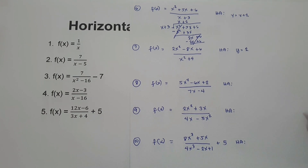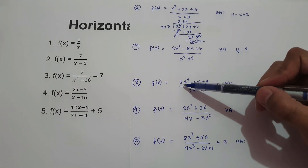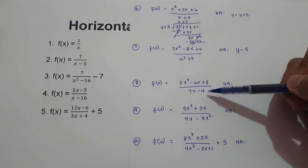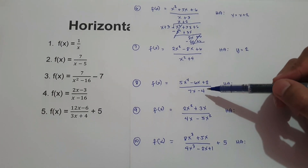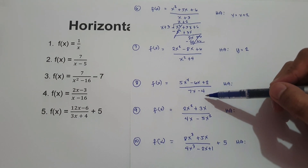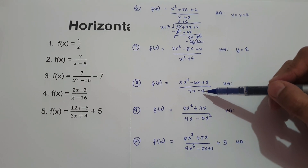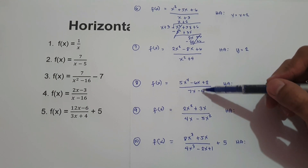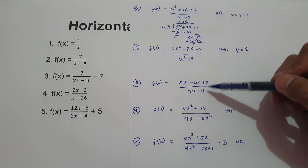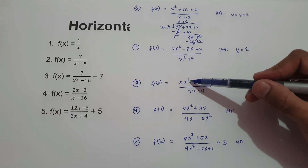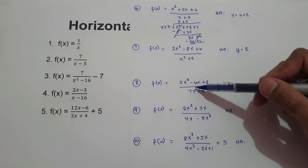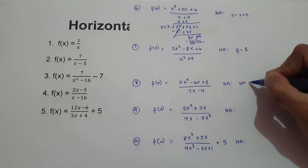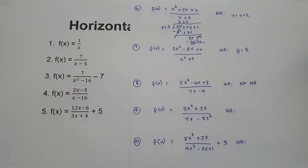Number 8: f of x equals 5x to the 4th minus 6x plus 2 over 7x minus 4. Number 8 falls in case number 3 because the degree of the numerator is greater than the degree of the denominator. Therefore, there is no horizontal asymptote and there is no oblique asymptote, because the degree of the numerator exceeds the denominator by more than one.